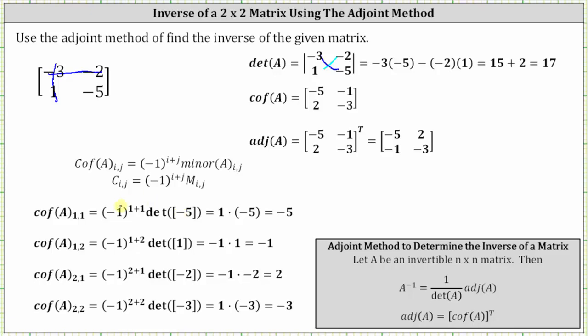Simplifying, we have the square of negative 1, which is 1. The determinant is equal to negative 5, and therefore the cofactor is 1 times negative 5, which is negative 5.